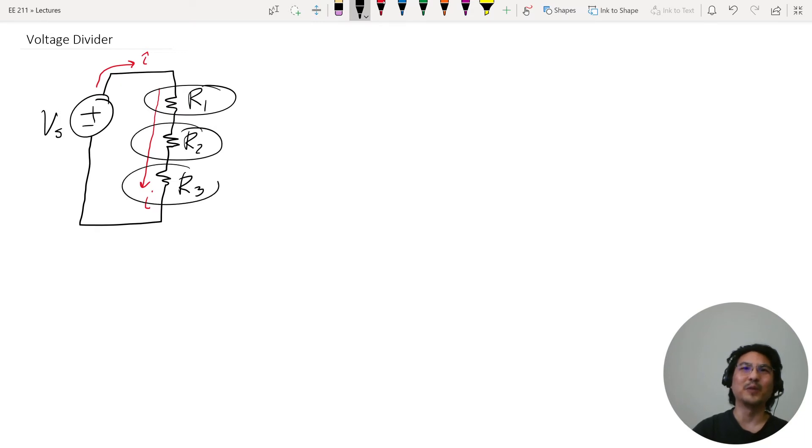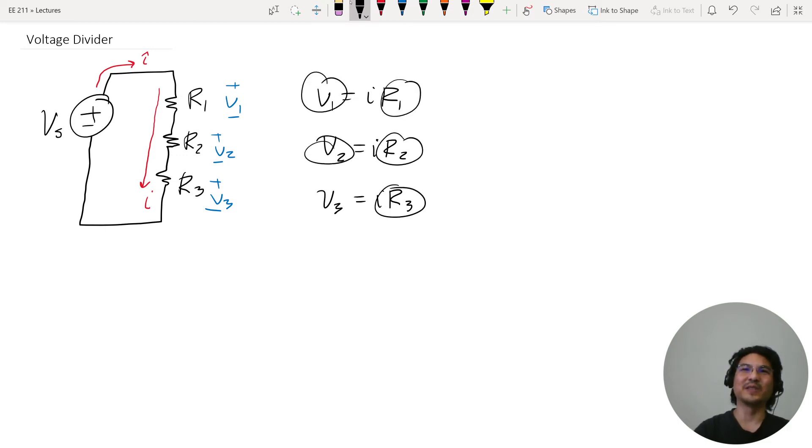But they would each have a different voltage because the resistances are different. So let's label each, and you can label however you want. I'll call this V1, this V2, and this V3. The way I drew my coordinates, this is V equals positive IR. The voltage drop is going down, the current is going down, so they're in the same direction. The current's all the same, but the resistances could be different, and so therefore the voltages will be different.